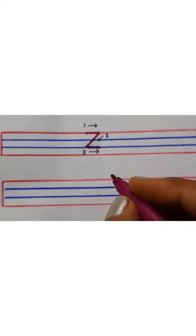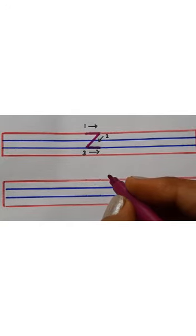Let's learn how to write letter Z step by step. So, in the first step, we are going to make a sleeping line.